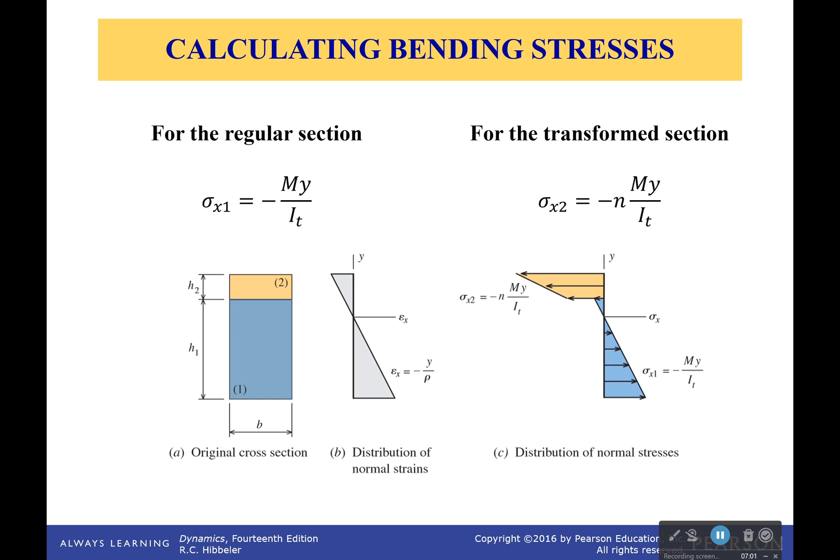So for the regular section, we're going to have our internal bending moment times the distance from the centroid over I. And in our transformed section, it's going to be the modular ratio times the bending moment times the distance from the centroid over I. And what is this? That's the moment of inertia for the transformed section.